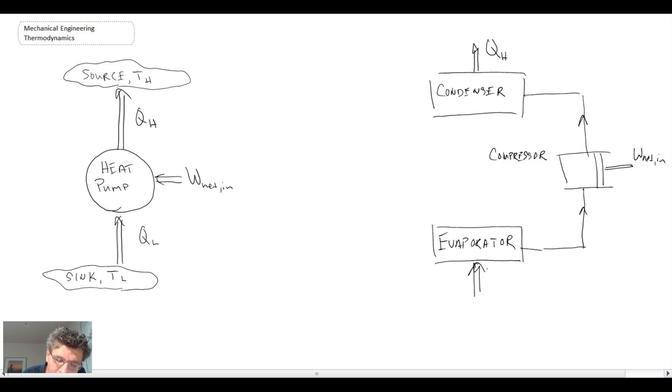We have an evaporator, and that's where the low temperature heat source is coming in. And then after the condenser, we come out and here we have an expansion valve or a throttling valve where we lower the pressure.